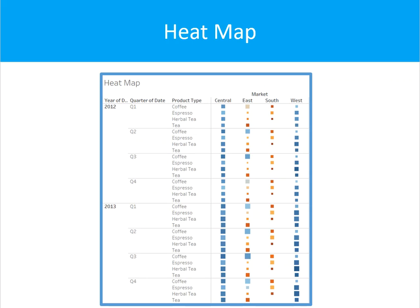The next chart we'll talk about is a heat map. This is similar to a text table, but it uses size and color as visual cues to describe the data. It allows us to easily tell a story about the data and it's an effective way to compare categories using color and size. Minimum requirements are one or more dimensions and one or two measures.